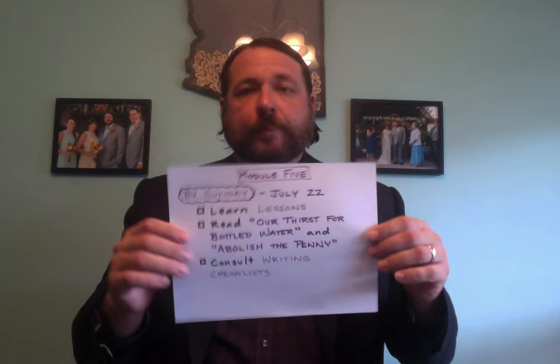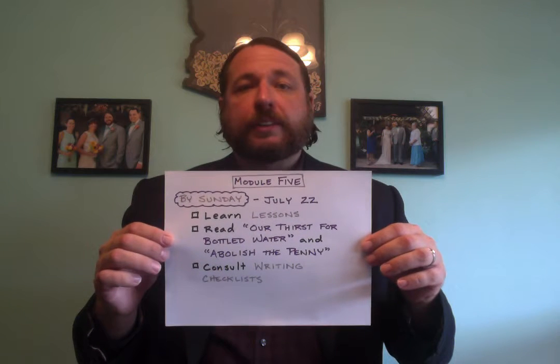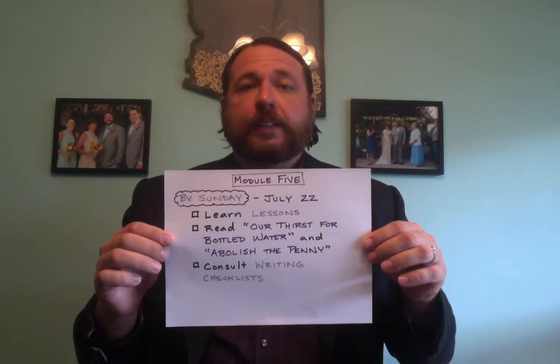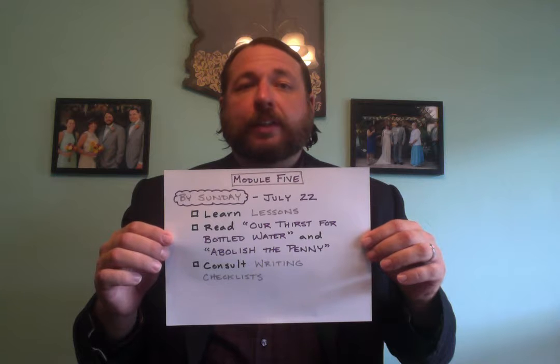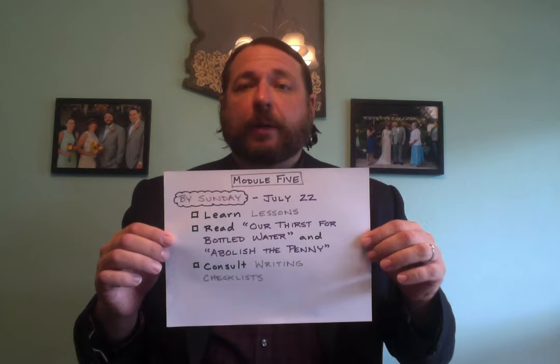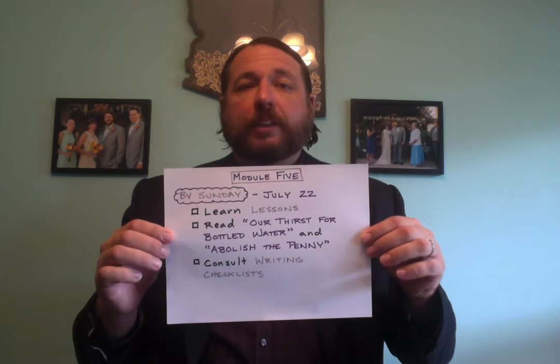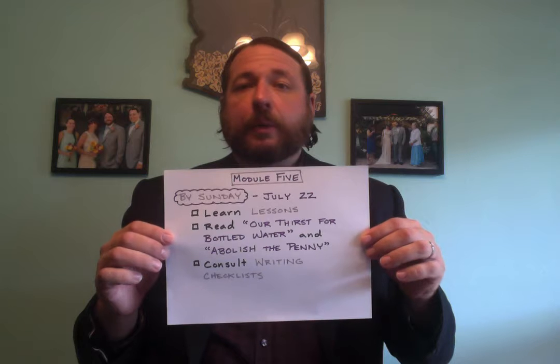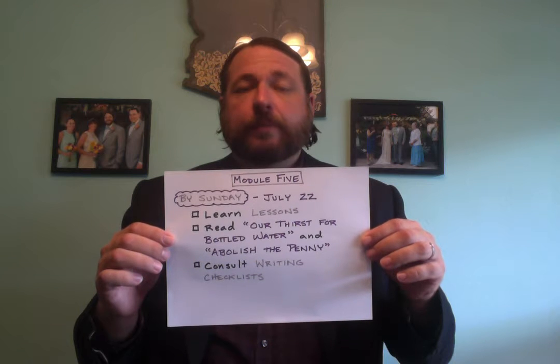you need to complete four academic tasks by 11:55 p.m. on Sunday, July 22nd. First, learn the lessons from Module 5. Second, read the example essays, "Our Thirst for Bottled Water" by Tom Standage, and "Abolish the Penny" by William Safire.